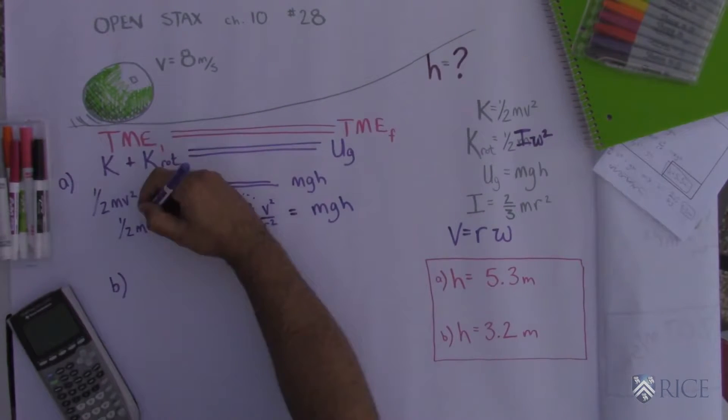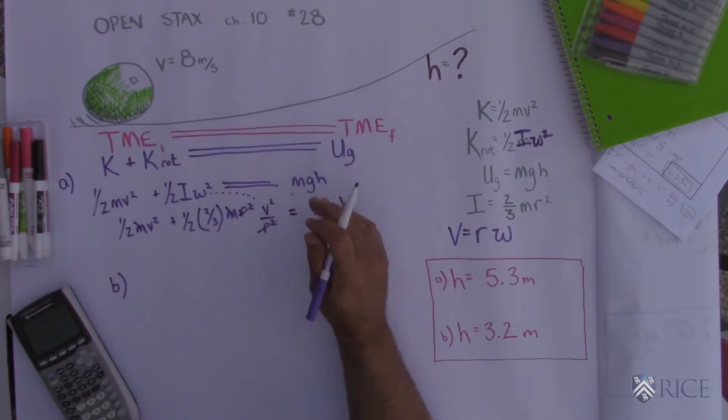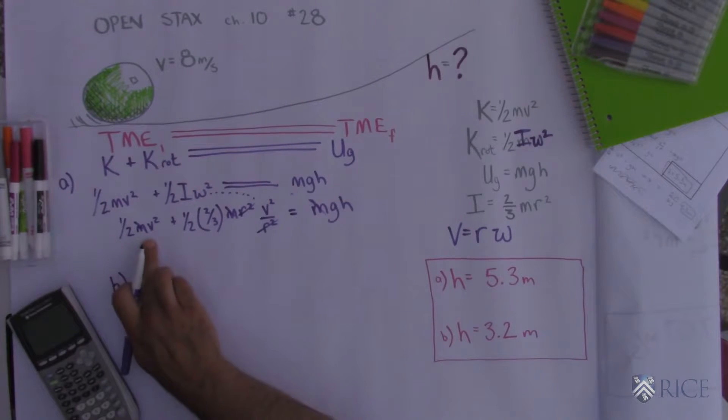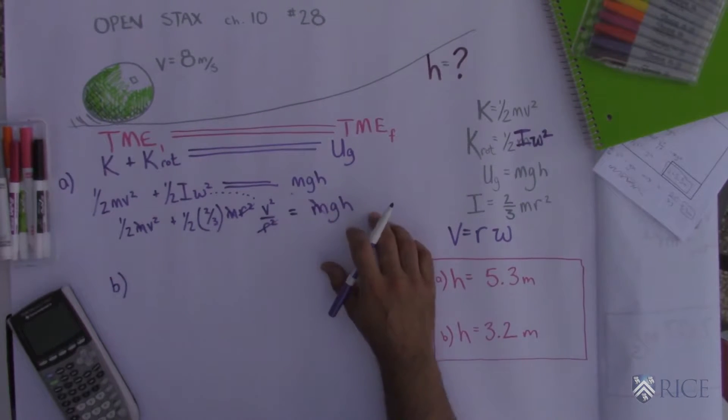Alright, here's where everything cancels out. Mass, gone. Radius, gone. So we don't even need to know those. And this comes out to be one-half v squared plus one-sixth v squared is equal to gh.